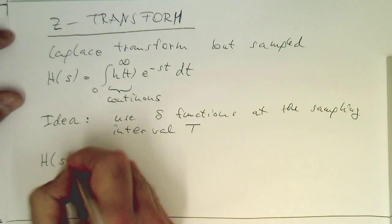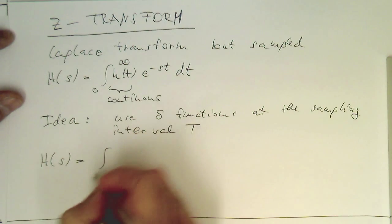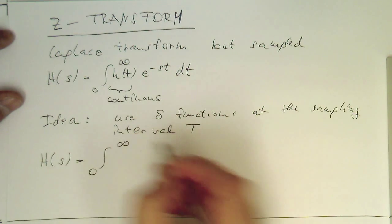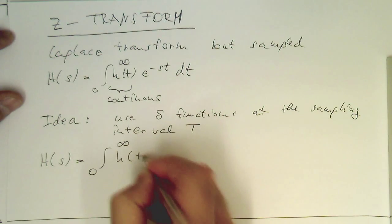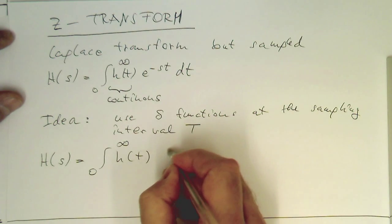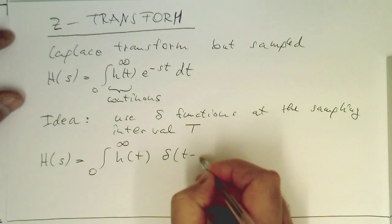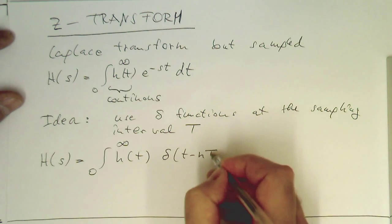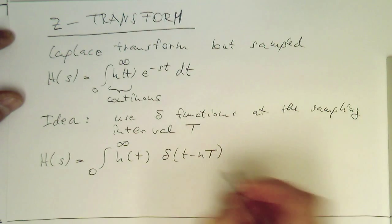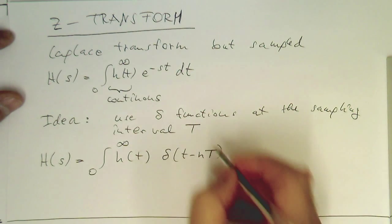We've got then H(s) equals zero to infinity. And then we've got our continuous function again. Now what we do is we're introducing delta(t - nT). This gives us here, that's our sampling interval T.